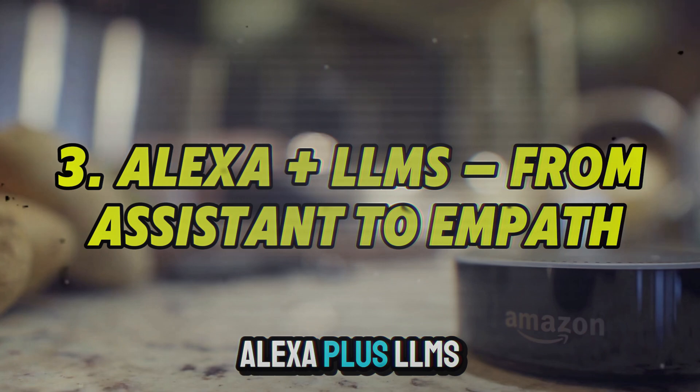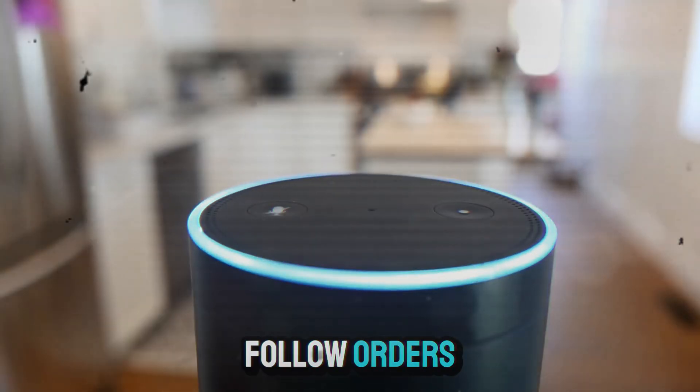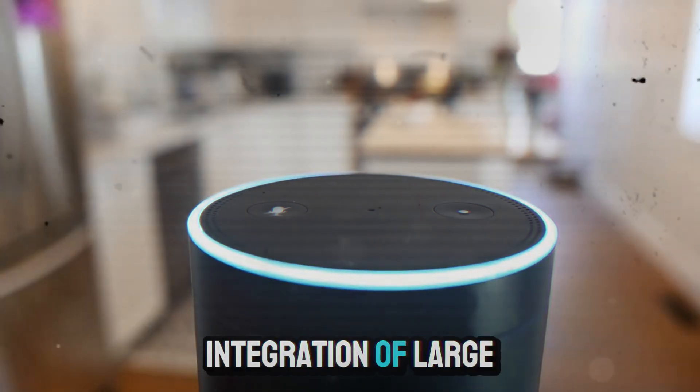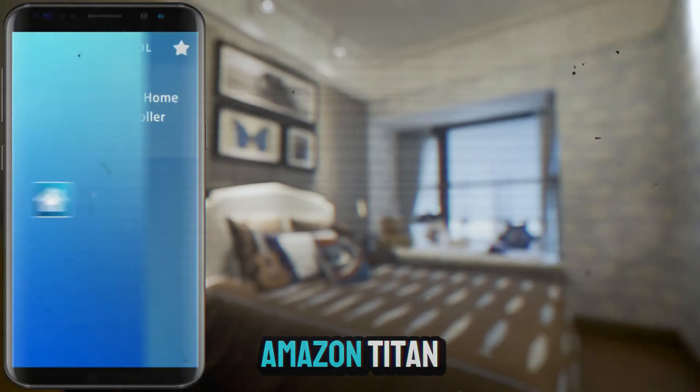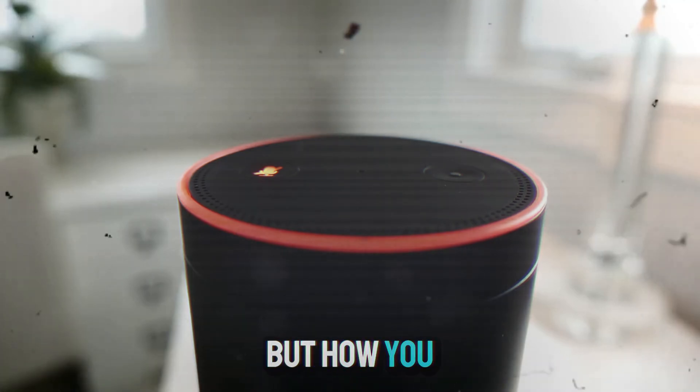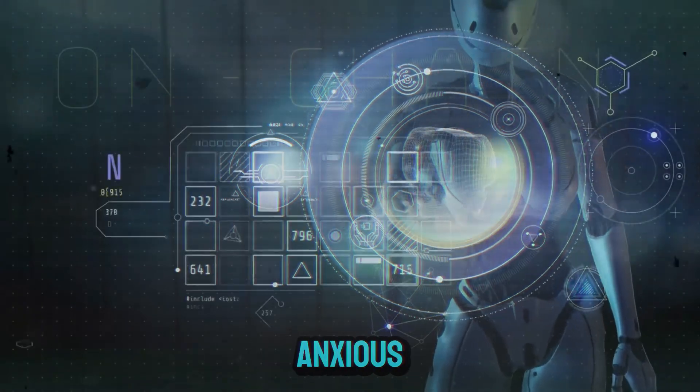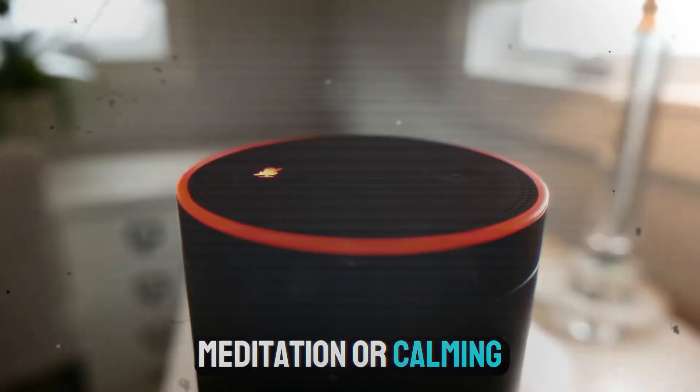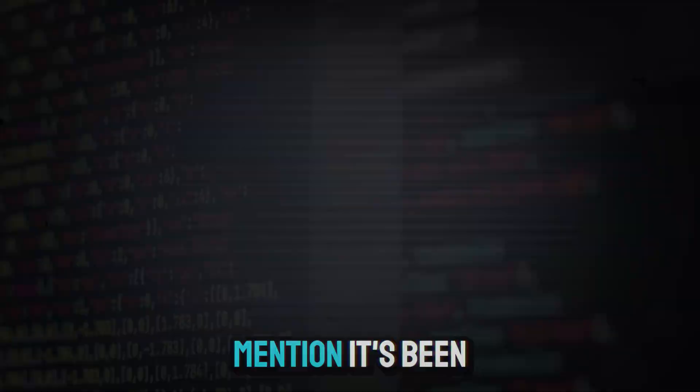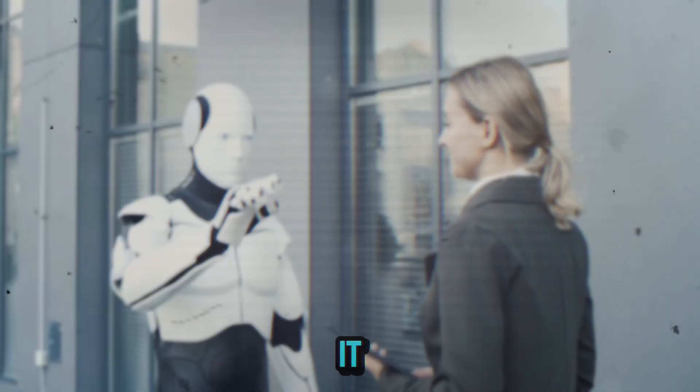3. Alexa plus LLMs, from assistant to empath. Alexa used to follow orders. Today, with the integration of large language models like Claude and Amazon Titan, Alexa can understand not just what you say, but how you feel. If you sound tired, it speaks more softly. If you sound anxious, it might suggest meditation or calming music. If you casually mention, it's been a rough day, Alexa doesn't just acknowledge it, it adapts to it.